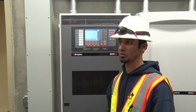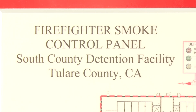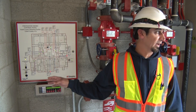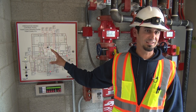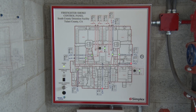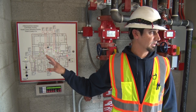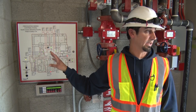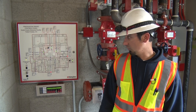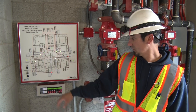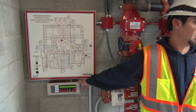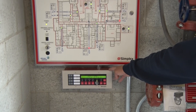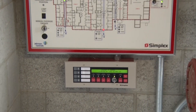Now we can head over to the smoke control panel. We have two different panels here — one is for the smoke control system, and as we talked about earlier, this one is not to be touched. It's strictly for firefighters in the case of an actual fire, so we're going to leave that panel strictly for them.